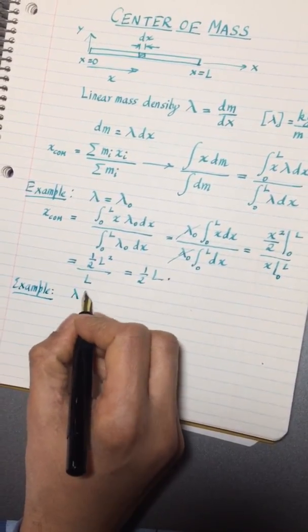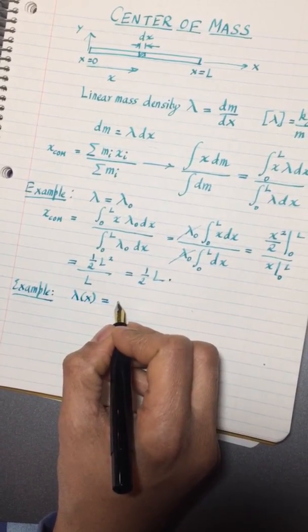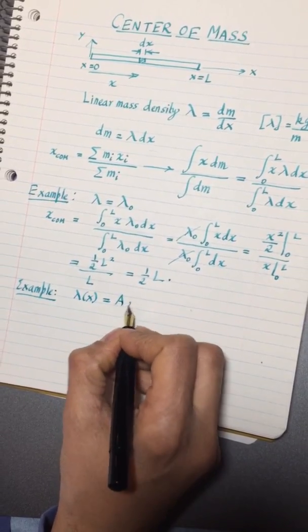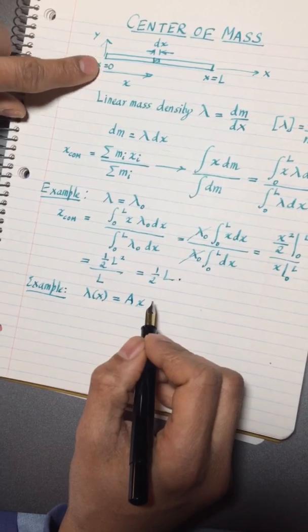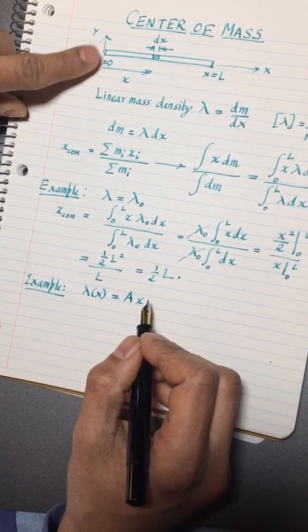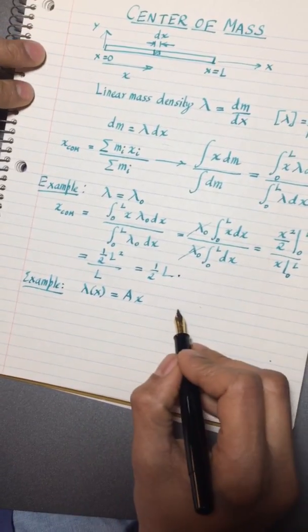Let's take an example of a rod which actually increases in mass as you go from left to right. So this could be something like A times x. Okay so this would be a rod for example that starts out being really lightweight on this end and somehow it keeps gaining mass.